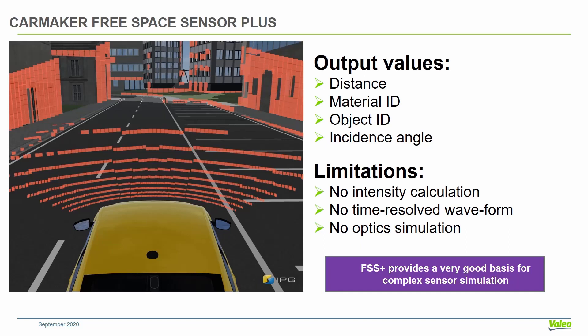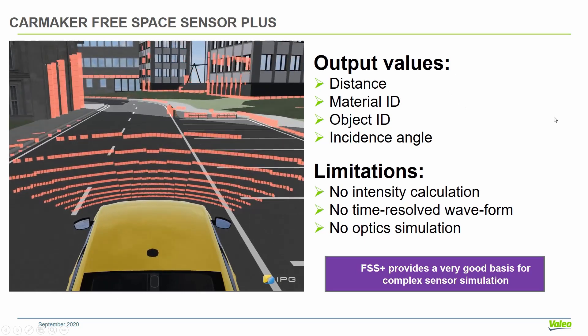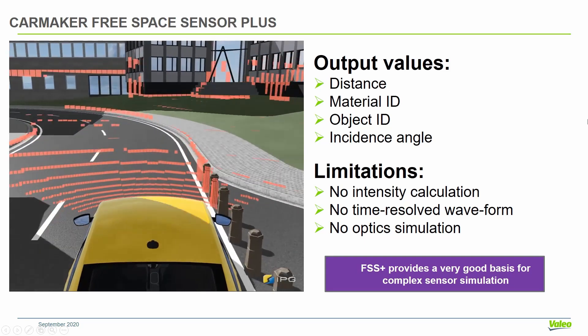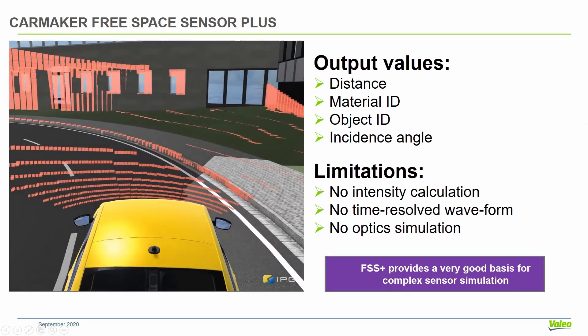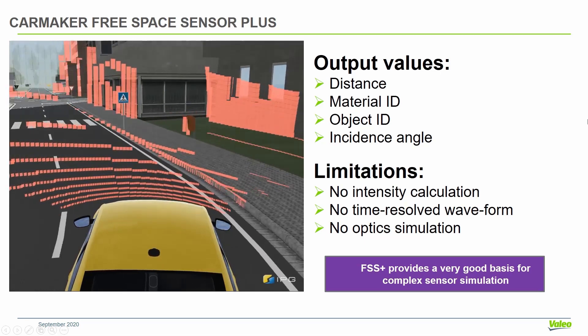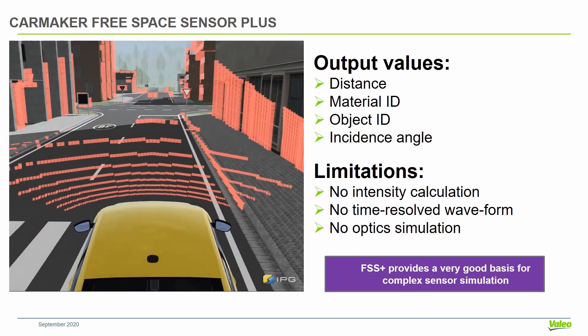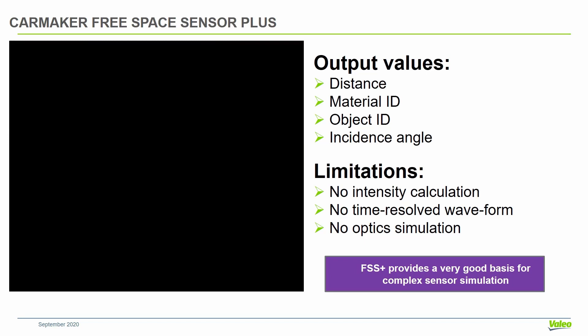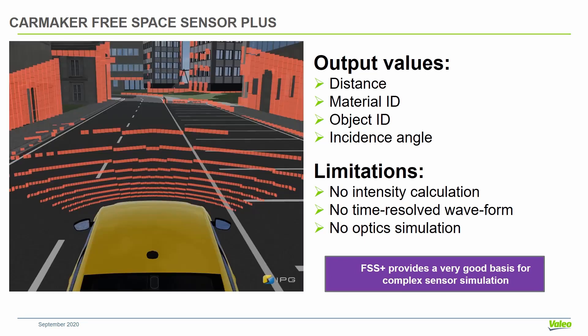Let me give you an overview of what the FreeSpace Sensor Plus looks like. On the left, you can see the output of this FreeSpace Sensor Plus. You can see these red squares which show the detections in CarMaker.